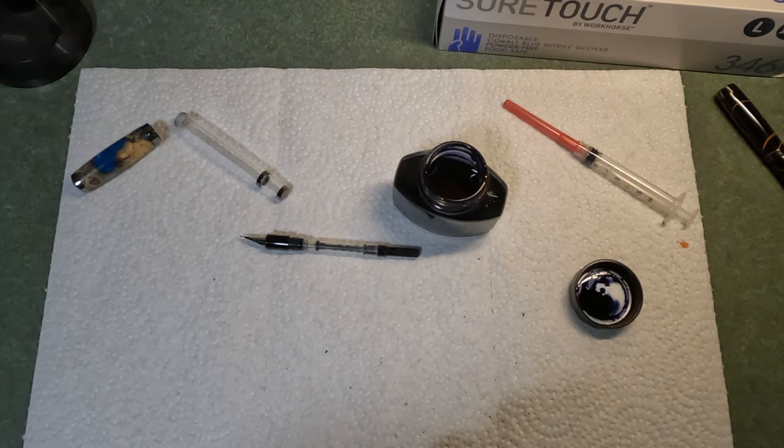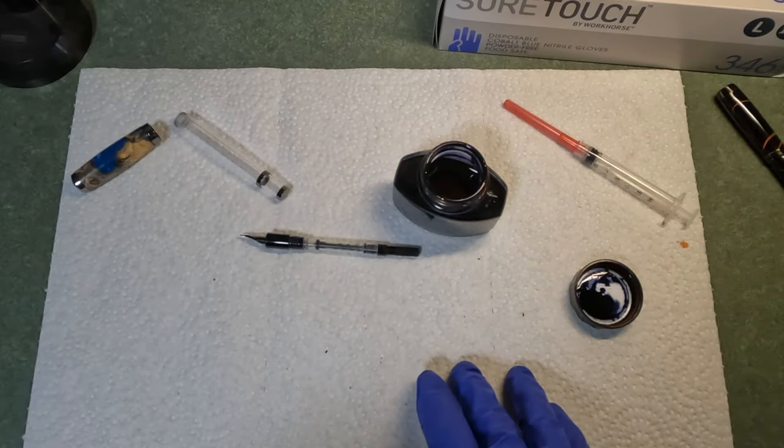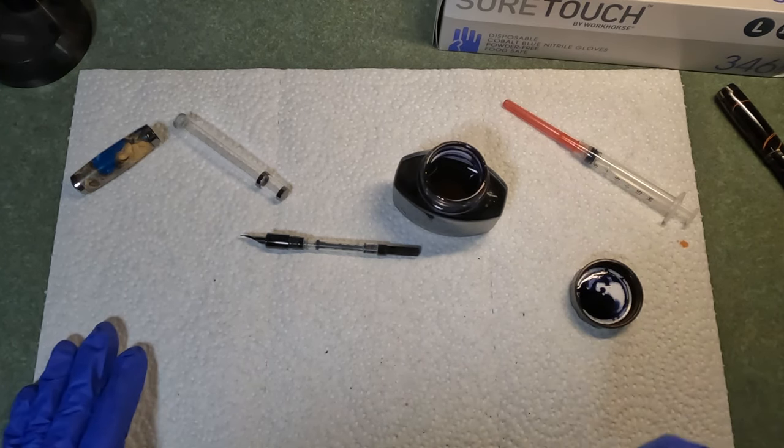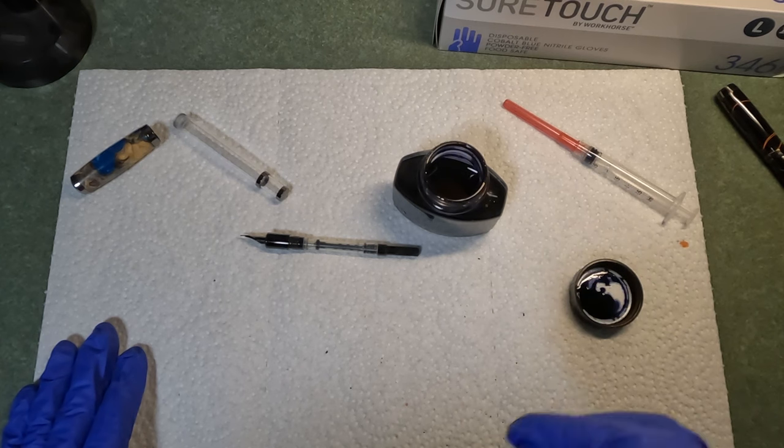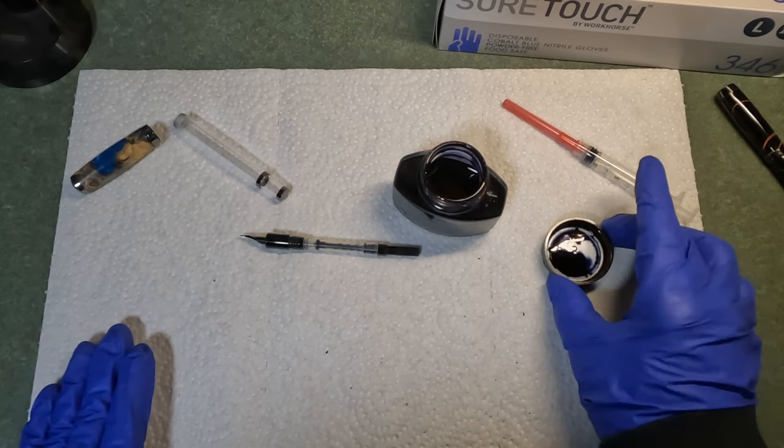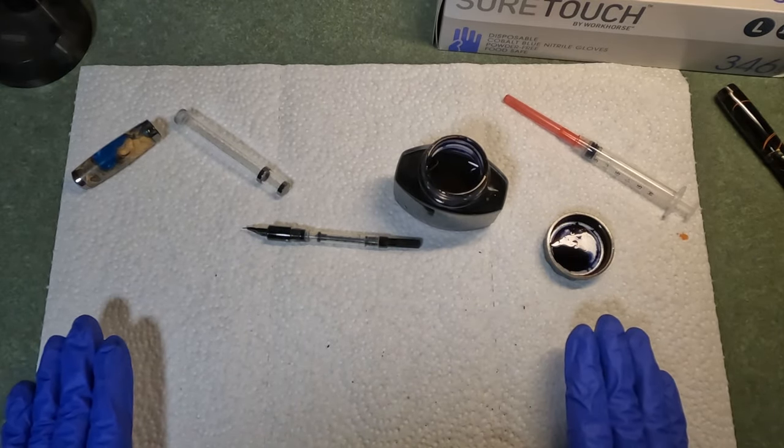So with fountain pens, you want to make sure that you are buying actual fountain pen ink. There are other types of ink, India ink, ink that is designed for dip pens, ink that is designed to be brushed on. There's different types of ink. So make sure you're getting a good quality fountain pen ink. Don't try to fill it with anything else. Your pen will clog and it'll cause you a nightmare.